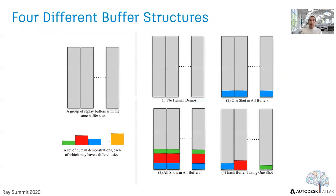To start this experiment, we propose four different buffer structures for our study. Number one: not using human demonstrations at all. Number two: randomly picking one human demonstration and inserting it into all buffers. Number three: inserting all human demonstrations to each buffer. Number four: each buffer randomly picking a single human demonstration.